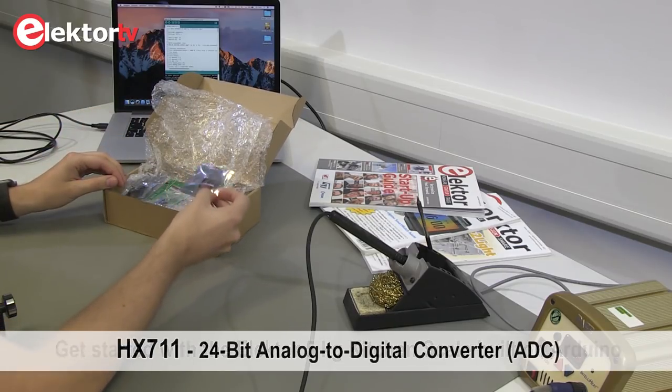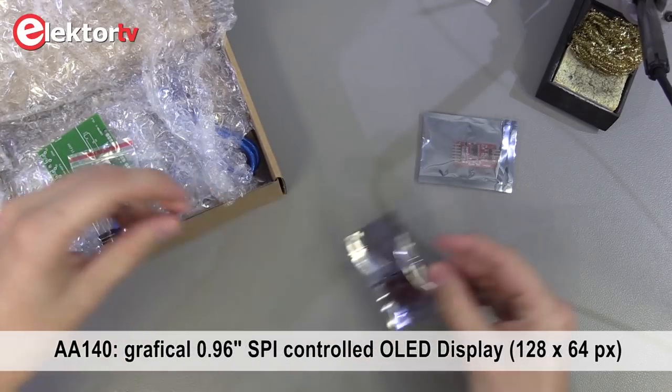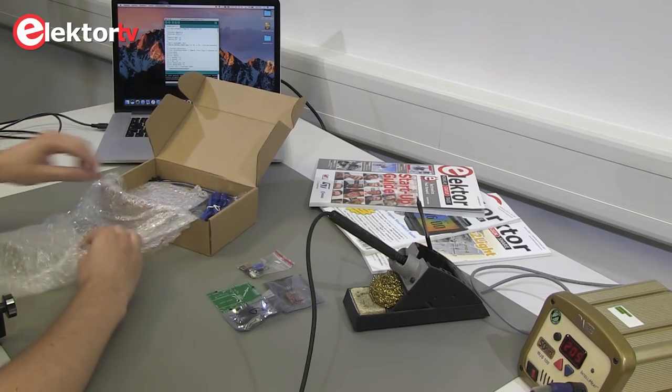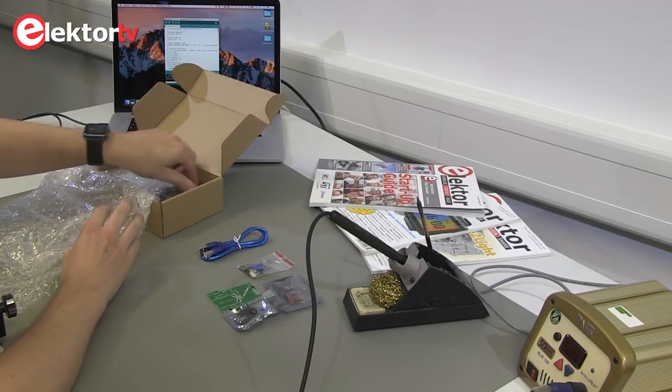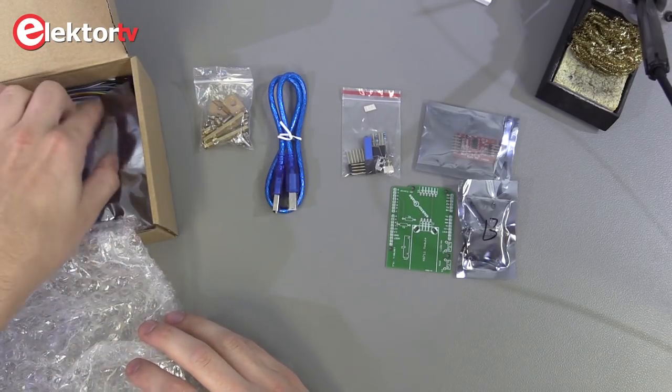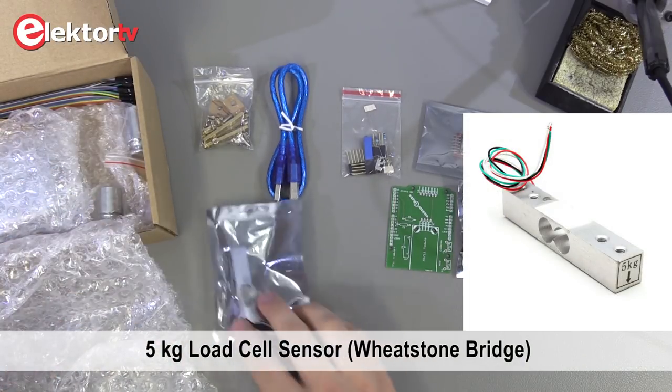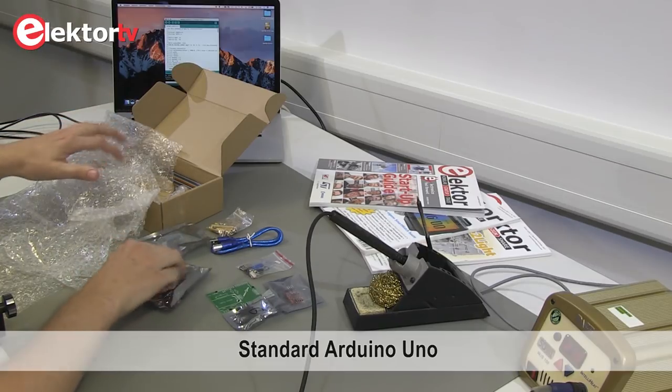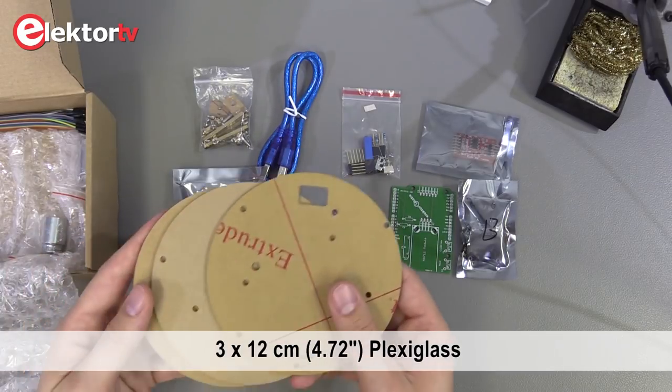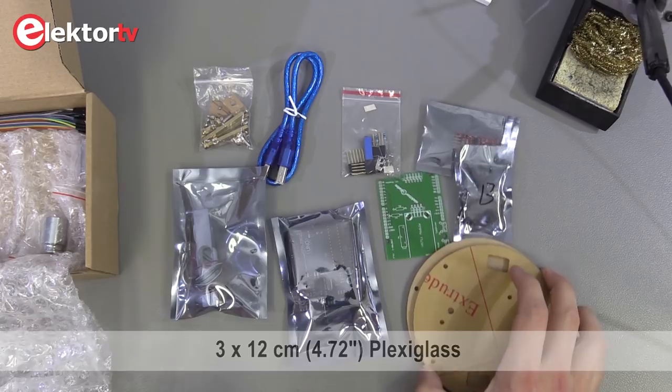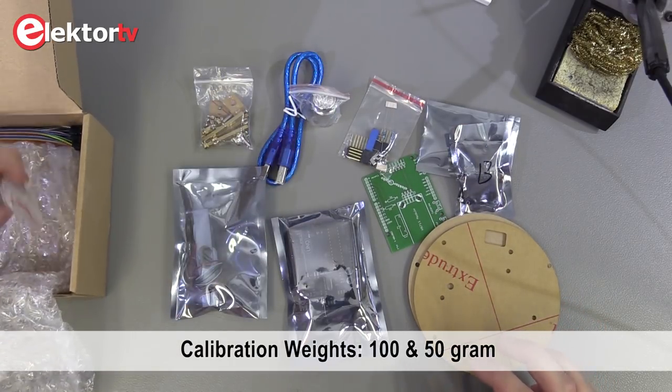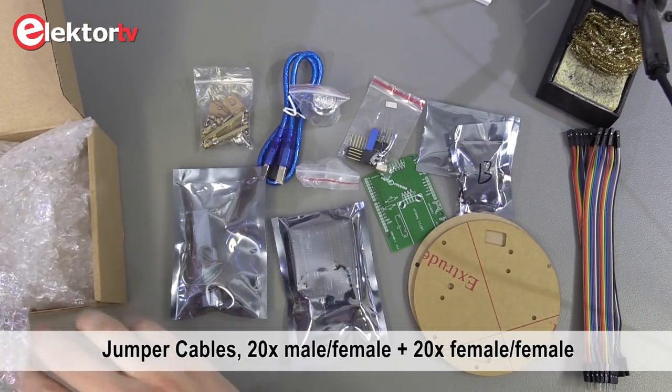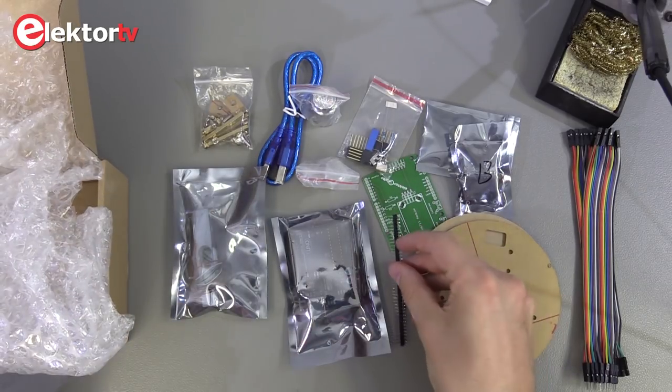In this kit we have an HX711 module, a display, a PCB, a bag with components for the PCB, a USB cable, a bag with spacers, nuts and bolts, a load scale element, an Arduino Uno, some plexiglass plates (three of them), two weights, and as a bonus, two sets of jumper cables and some headers.